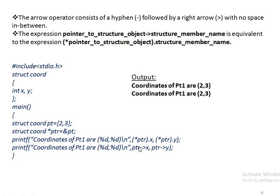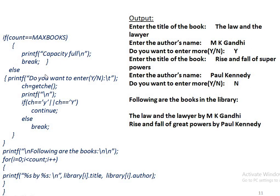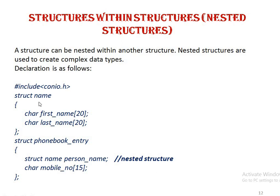Array of structures: when we have more than one structure variable, an array can be created where each element is of structure type. Here, struct book is created and 'library' is an array of structures. The library array is filled using a loop variable. MAX_BOOK is a macro with value 10. The loop runs while the user wants to enter more information or the count is within the limit, and a break statement exits the loop.